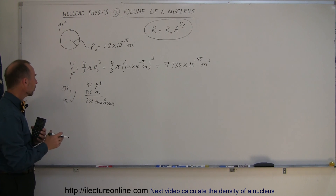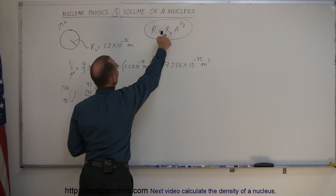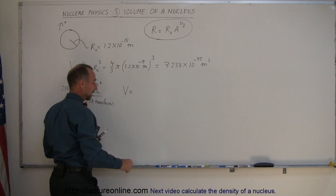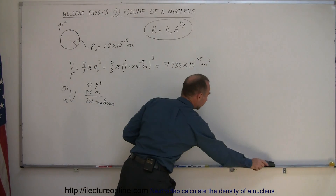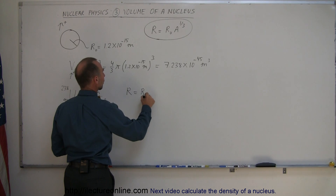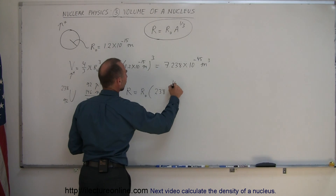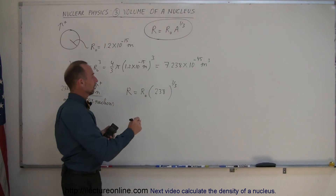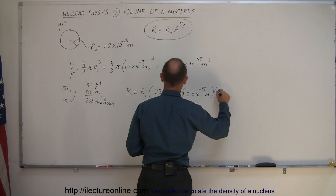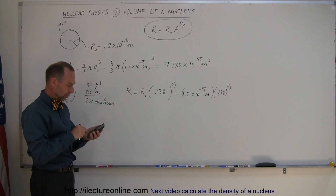So what would be the volume of uranium-238? Let's find the radius first, otherwise we can't find the volume. The radius of uranium-238 is equal to the radius of a single proton times the total number of nuclear particles, which is 238, raised to the one-third power. This is equal to 1.2×10⁻¹⁵ meters multiplied by 238 to the one-third power.